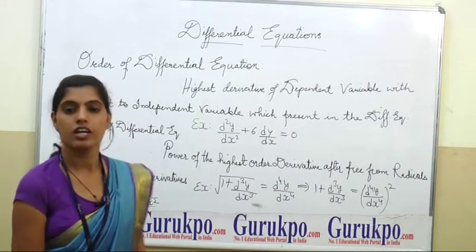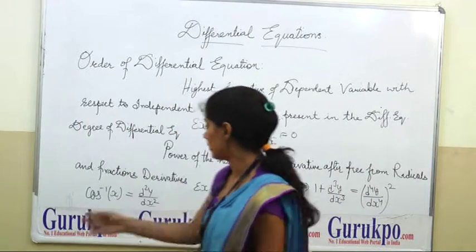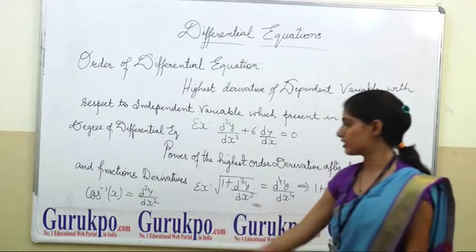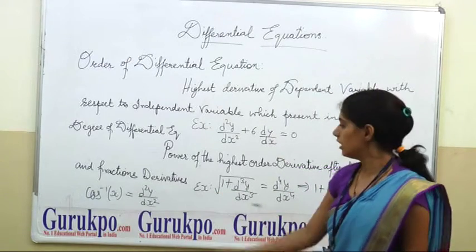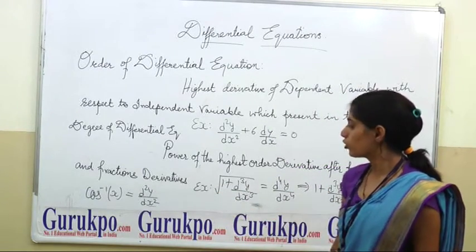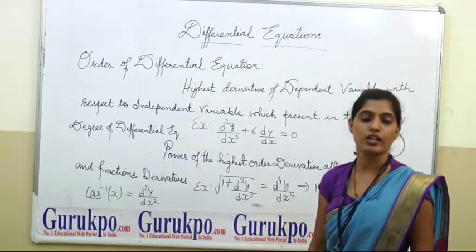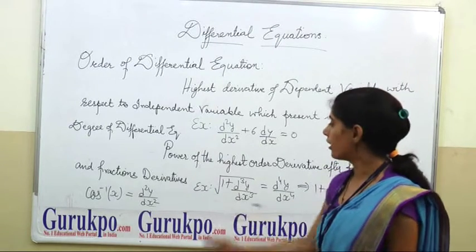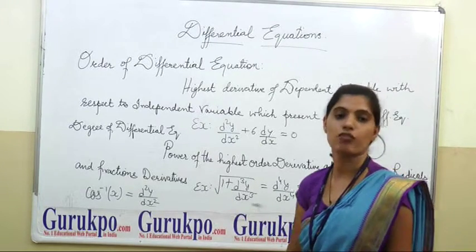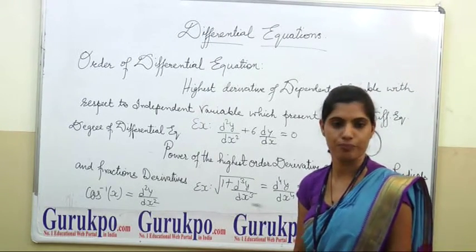In another example: cos⁻¹(x) = d²y/dx². Here 2 is the order of the differential equation and 1 is the degree of the differential equation.